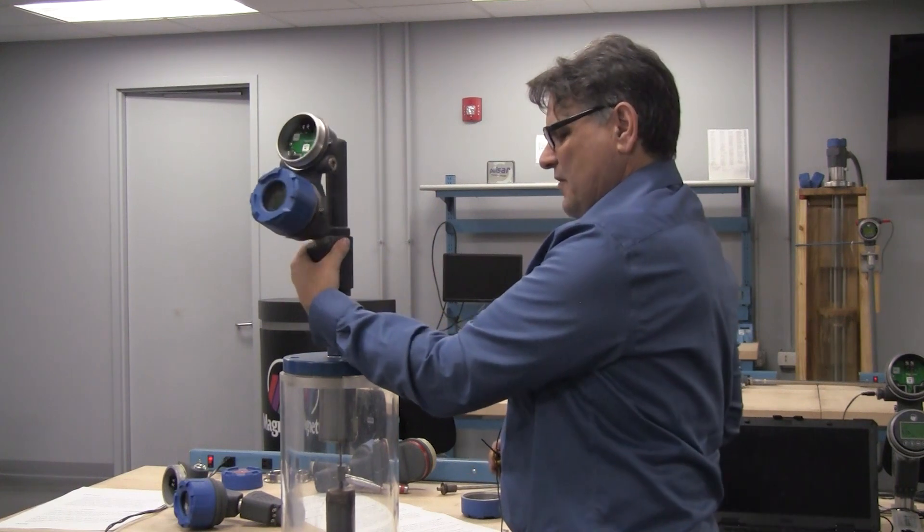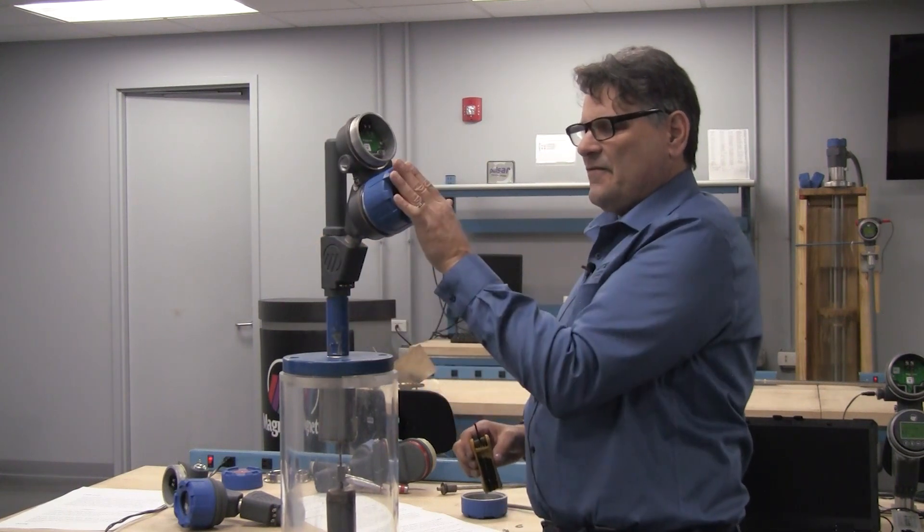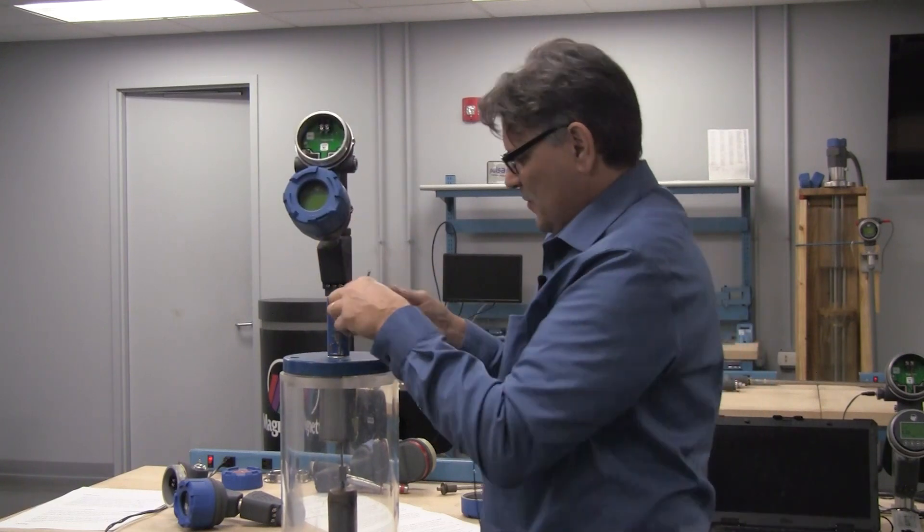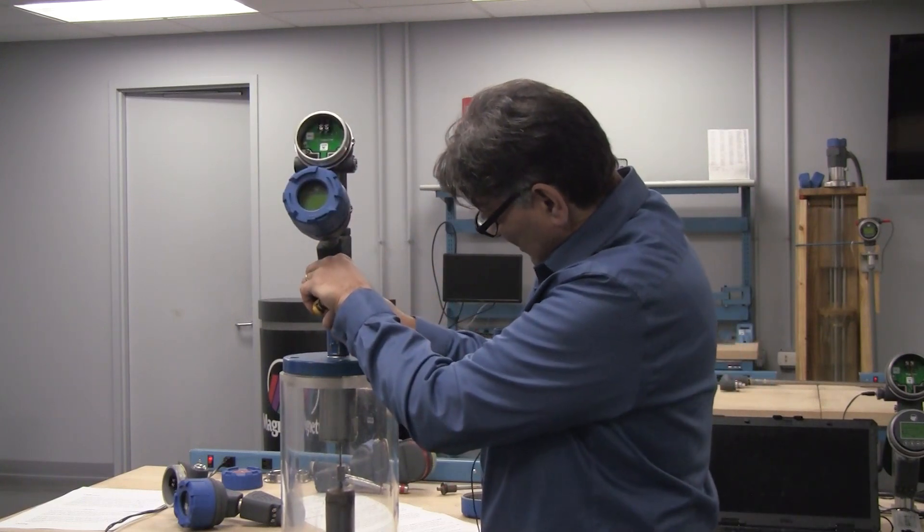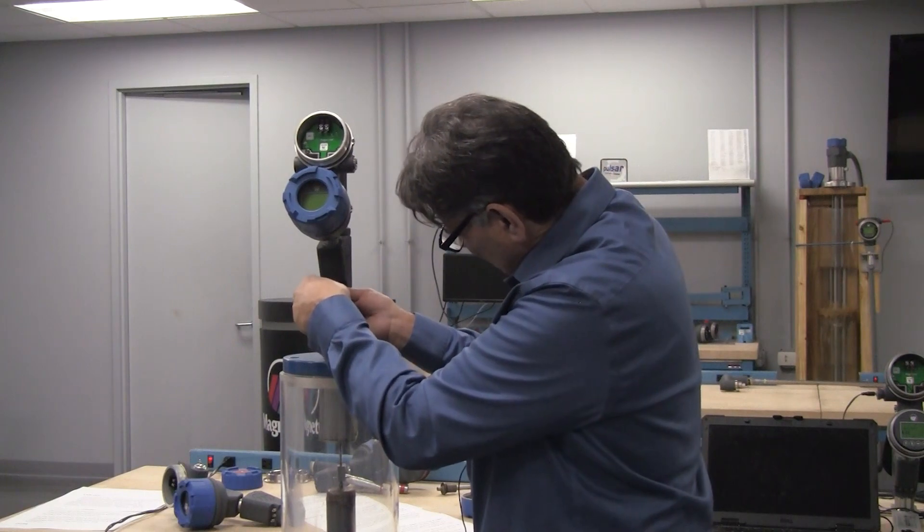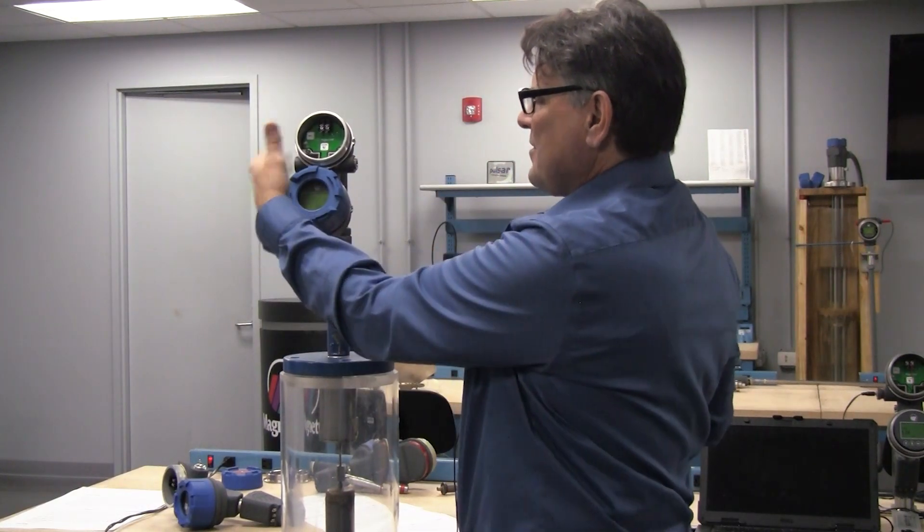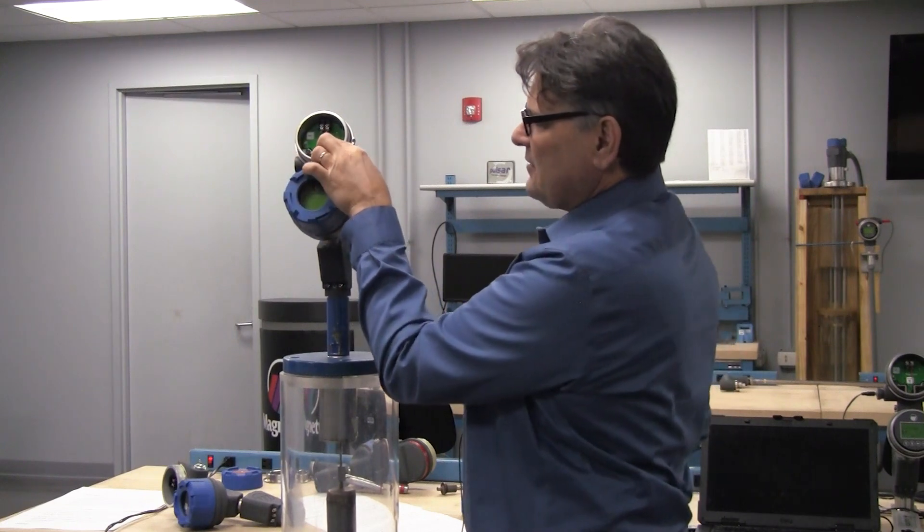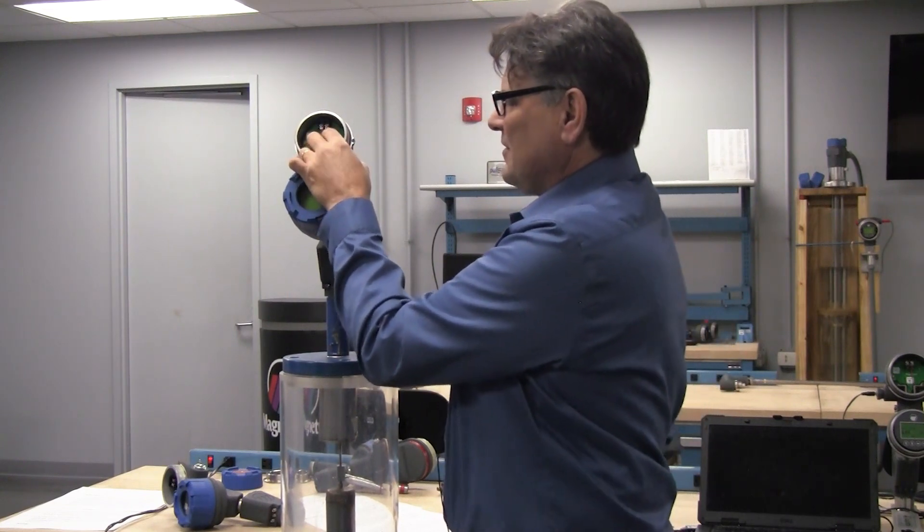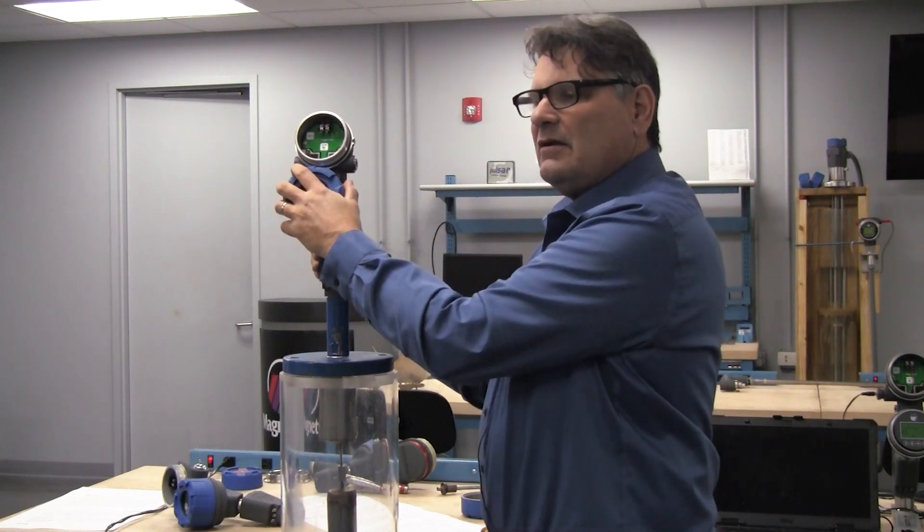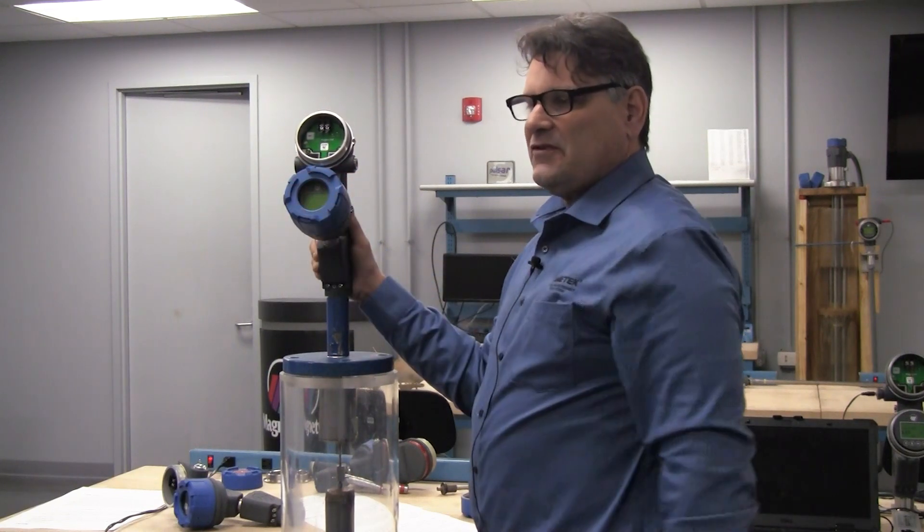Now you can rotate the transmitter to provide whatever orientation for the display you would like, so in my case I'll just point it out straight. I'm going to tighten up the eighth inch Allen screws. Now you would run your wires in, attach your loop, positive to positive, negative to negative up here, and you are now ready to perform the calibration of the unit.